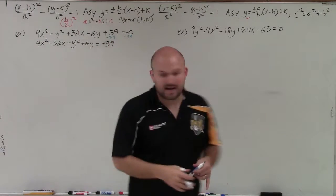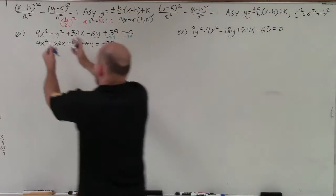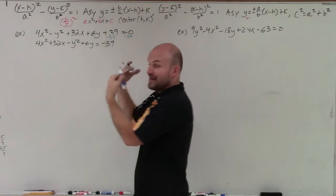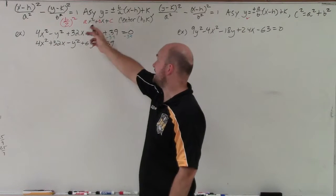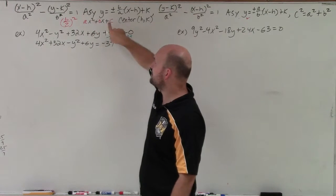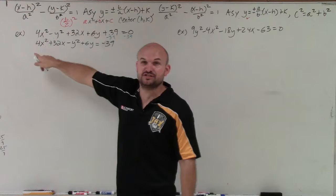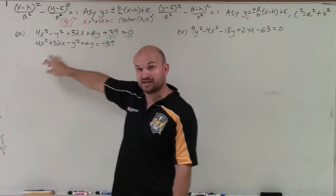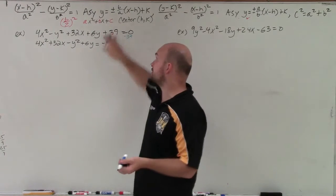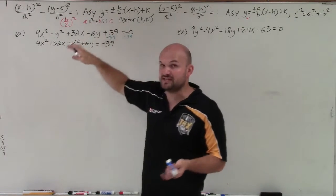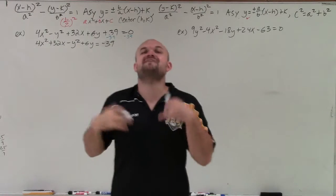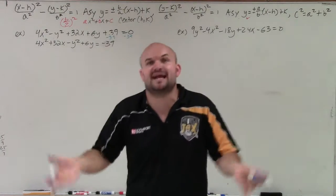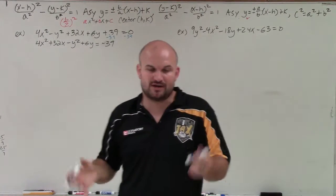Now we have our x's and our y's. We have two quadratics — ax² + bx + c — but both quadratics don't have a constant c. So we need to find the value c, which completes the square and creates a perfect square trinomial. The formula to do that is taking b divided by 2 and squaring it.